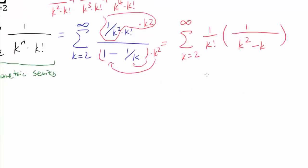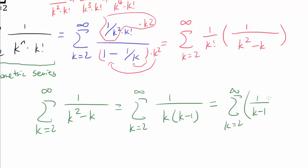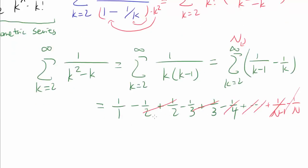We know how to evaluate the summation from k equals 2 to infinity of 1 over k squared minus k, because this is a classic telescoping summation: 1 over k times (k minus 1), which by partial fractions equals 1 over (k minus 1) minus 1 over k. When k is 2, we get 1 over 1 minus 1 over 2; when k is 3, we get 1 over 2 minus 1 over 3; and so on. All intermediate values cancel, and as n approaches infinity, 1 over n goes to 0, leaving us with 1.